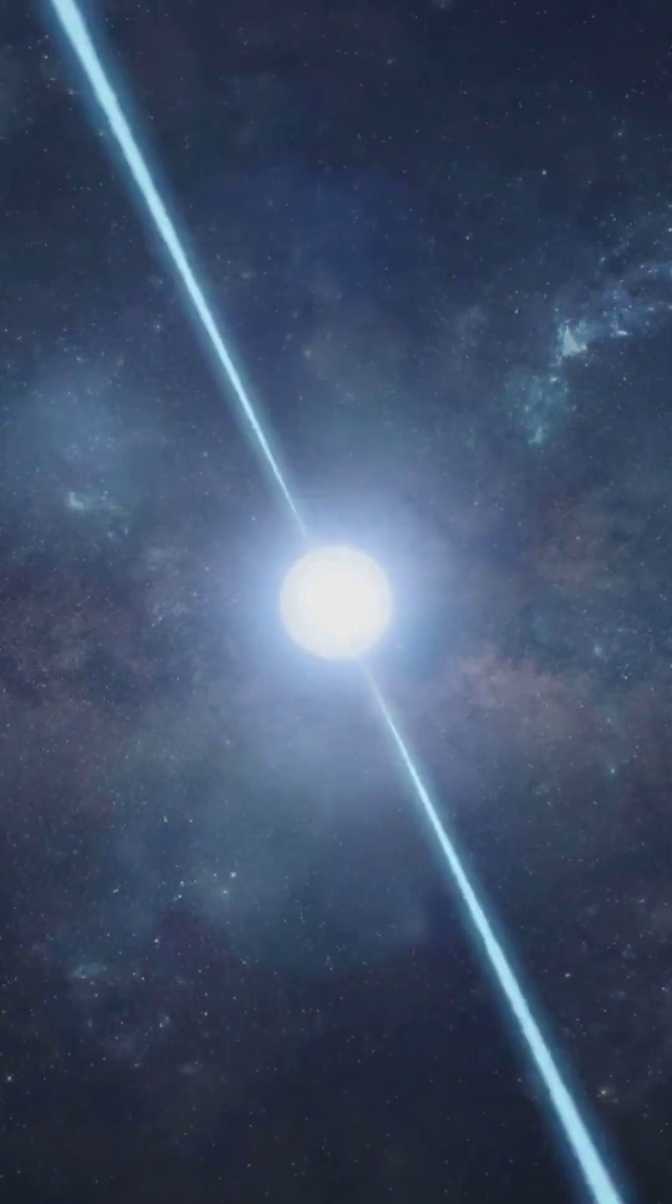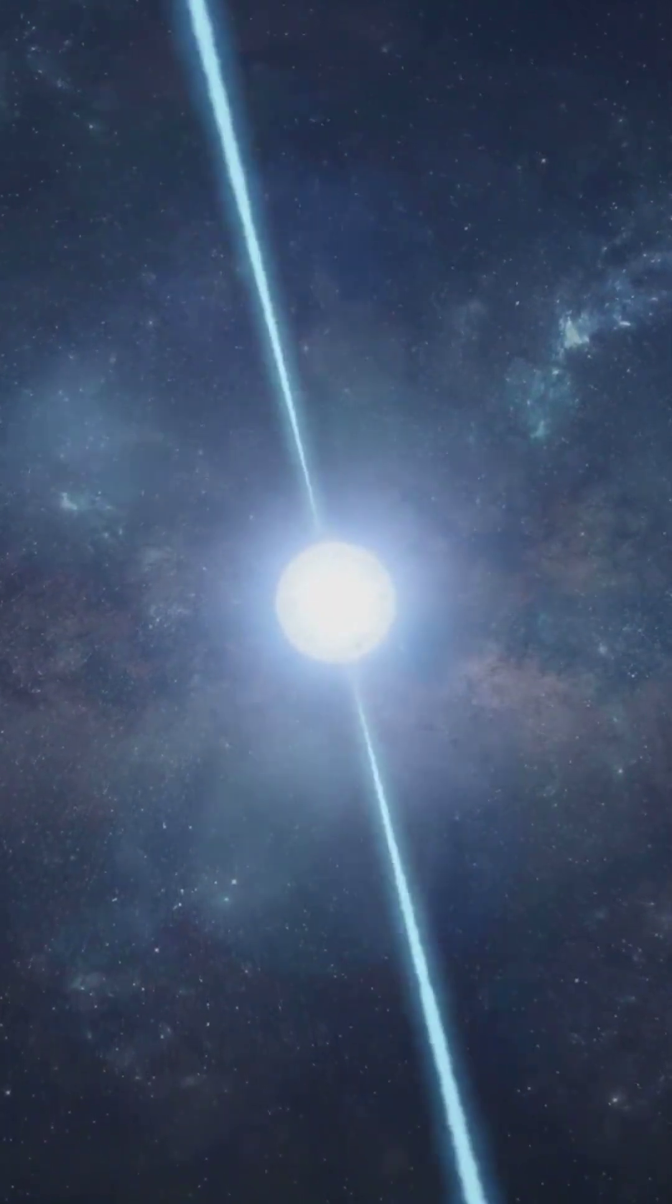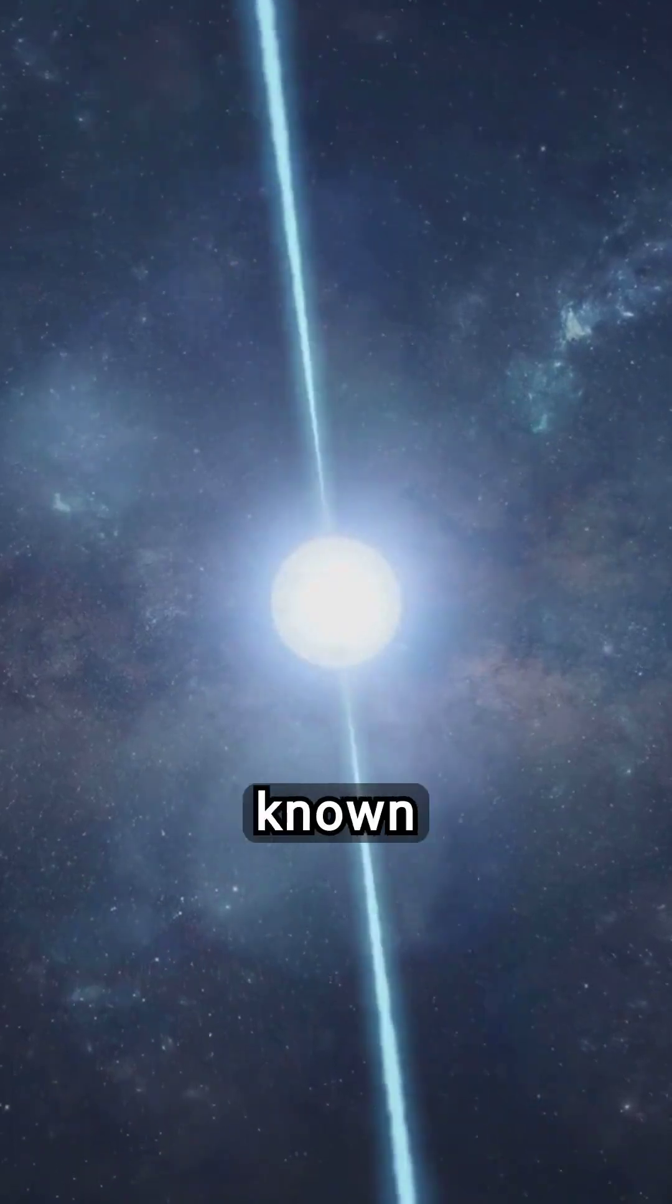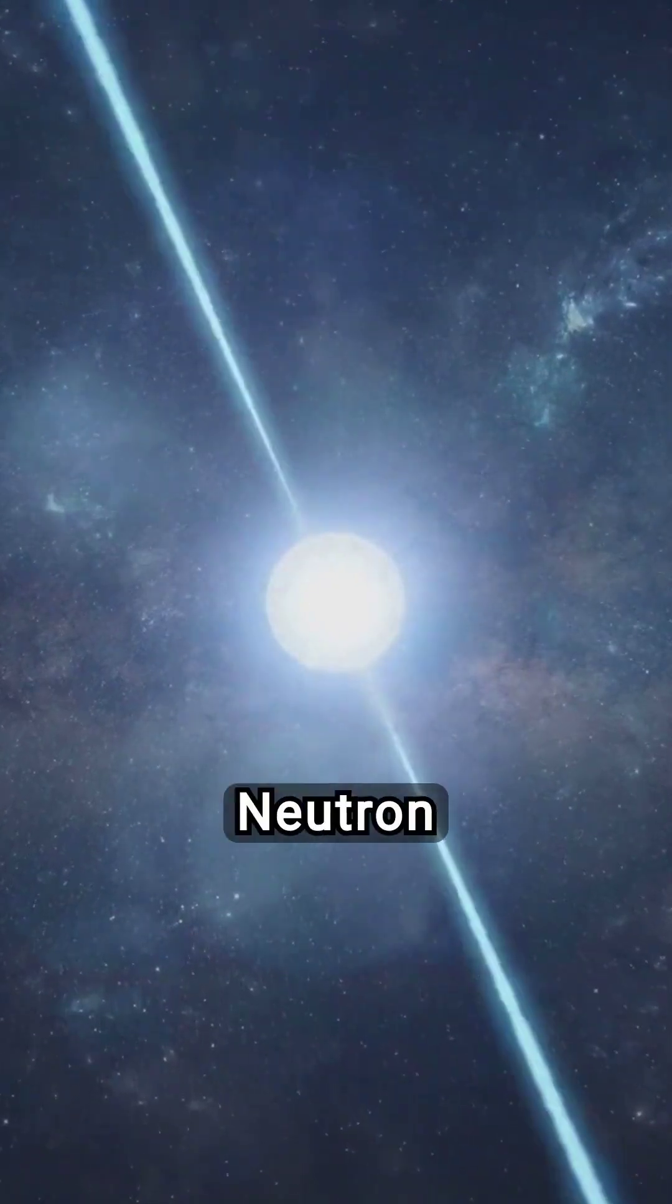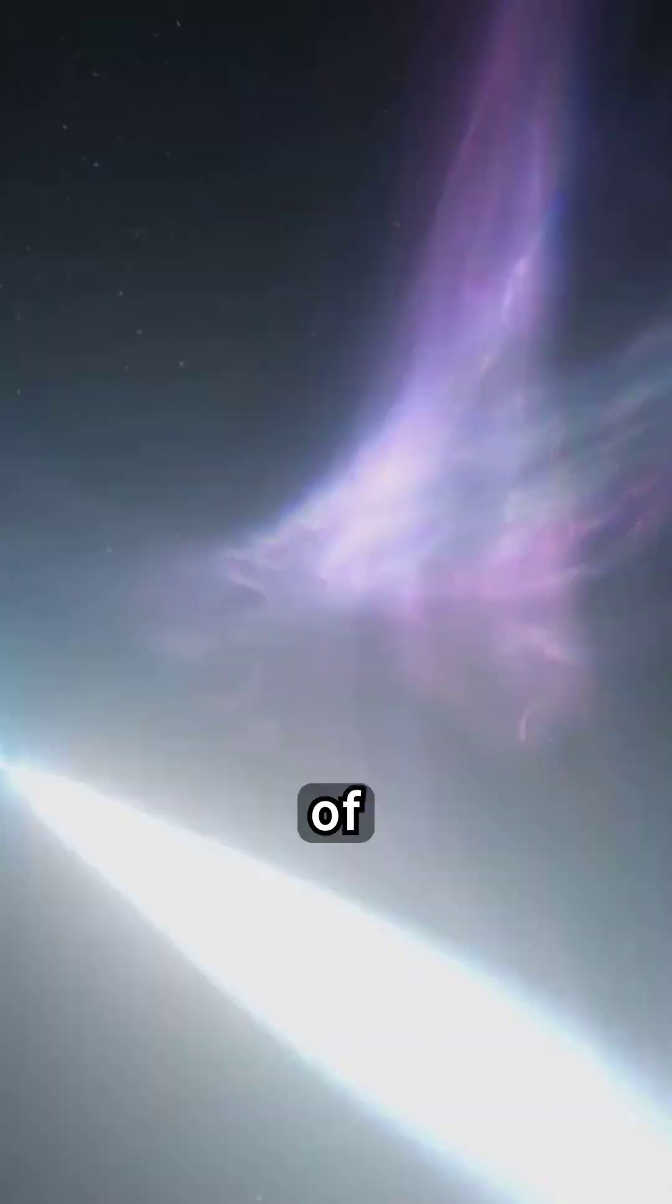But for the most massive stars, the end is far more dramatic. In cataclysmic explosions known as supernovae, they give birth to neutron stars. These incredibly dense objects, only about the size of a city, rotate rapidly and emit beams of radiation.